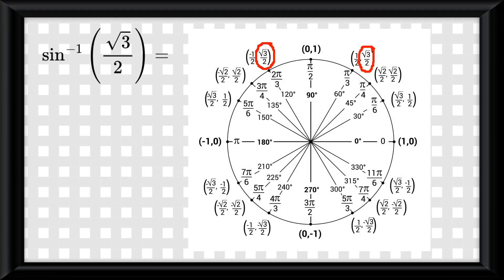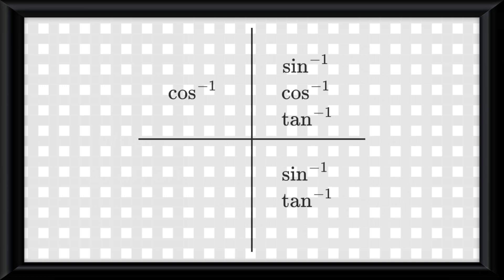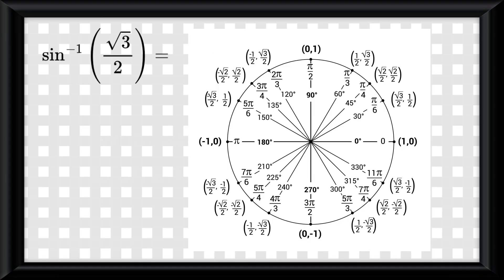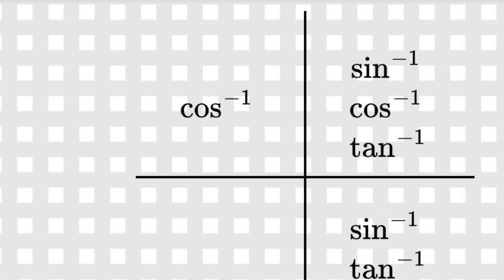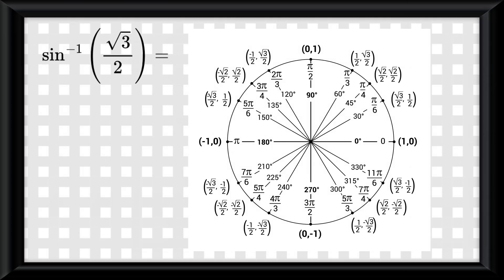Thing is, dealing with inverse functions, certain inverse functions only exist in certain quadrants of the graph, because of domain restrictions. Since inverse sine can only exist in quadrants 1 and 4, even if there is an answer of root 3 over 2 at 120 degrees, it can't be an answer because inverse sine can't exist there, meaning our only answer would be 60 degrees or pi over 3.